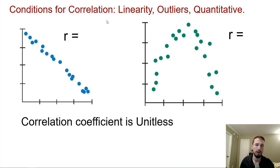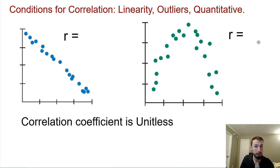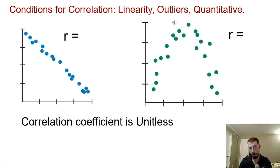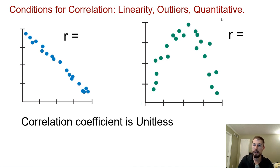For the conditions for correlation: first, we have to check for linearity — we need to graph the association to make sure it's actually linear. A curved association is not appropriate for calculating the correlation coefficient. Also look for outliers — a single outlier, called an influential or leverage point, can dramatically change the correlation, just like an outlier can change the mean or standard deviation. And it also has to be quantitative data.